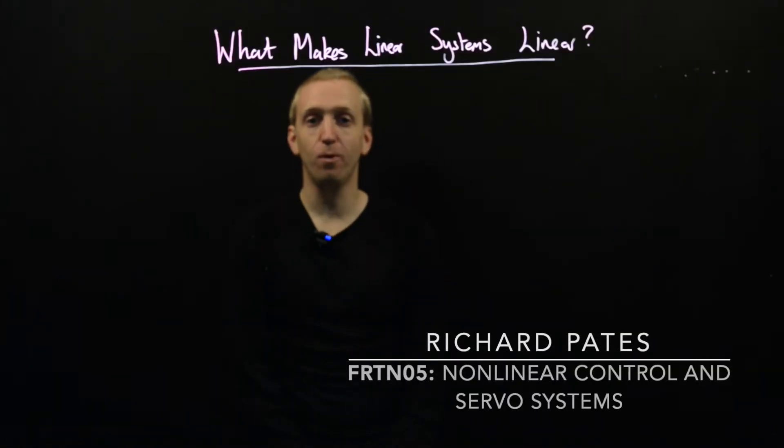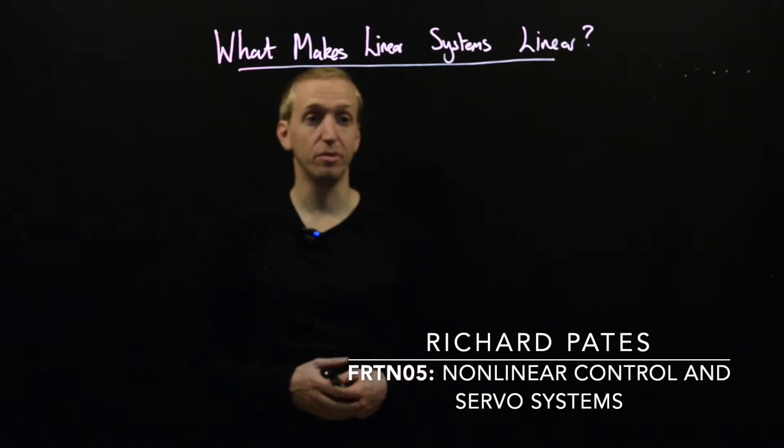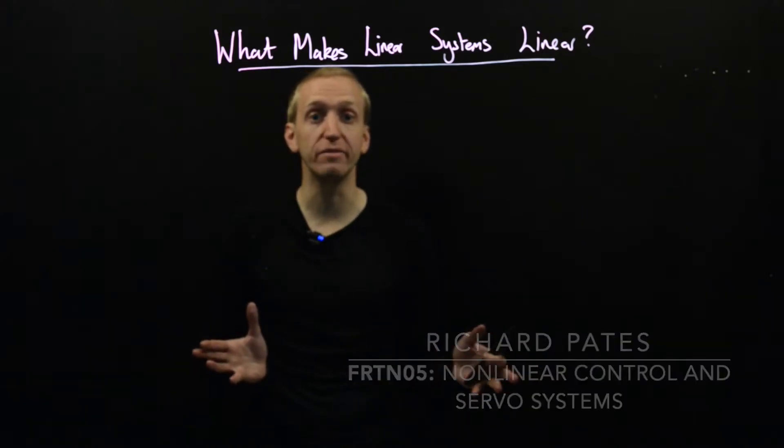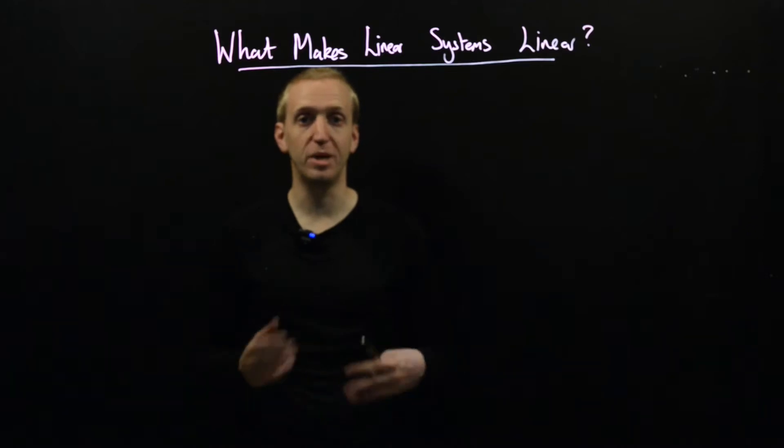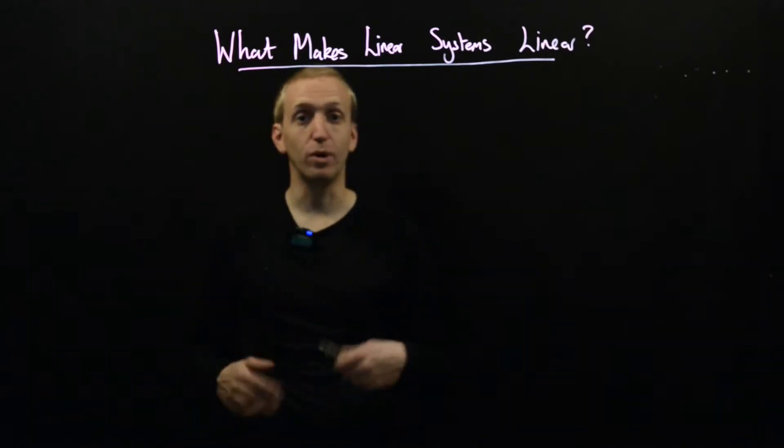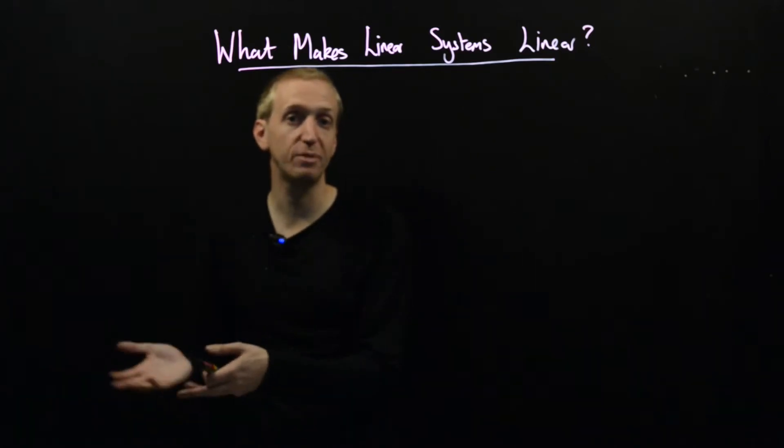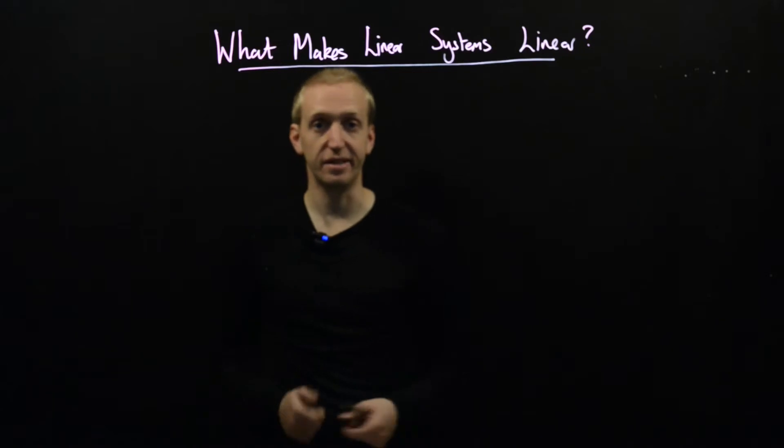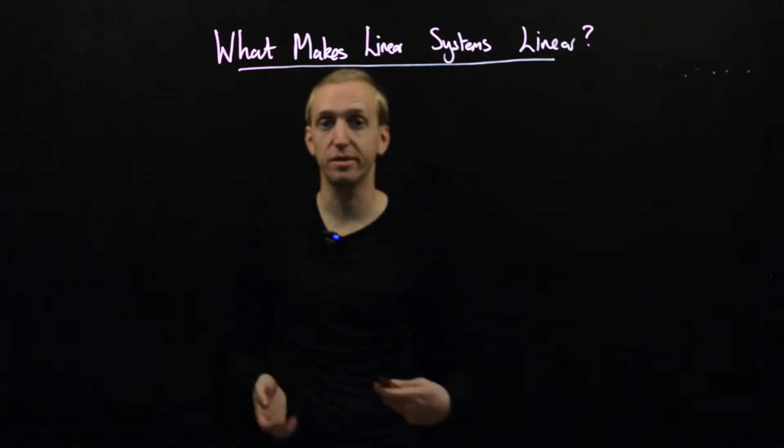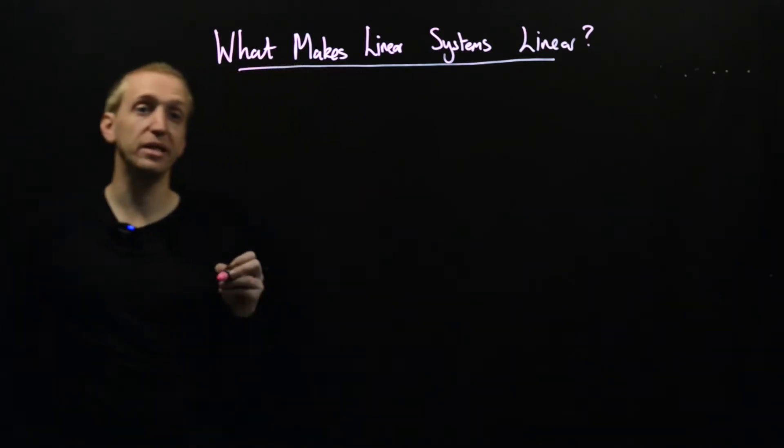Welcome back. Before we work out and try to understand all of these interesting nonlinear behaviors, I thought it would be helpful to recap what makes a linear system linear. This will help us understand why linear systems can't describe these more exotic behaviors and set the scene for the notation and types of things we're going to be using for describing the nonlinear world. So let's remind ourselves what a linear system is.